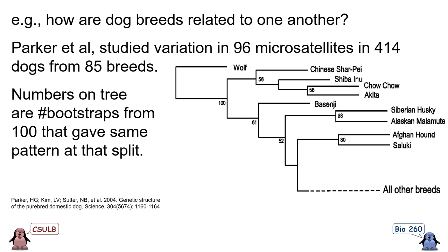Some breeds always clustered near each other, like Siberian Husky and Alaskan Malamute, which are very similar breeds — likewise for Afghan Hound and Saluki. On the other hand, in the Shar-Pei, Shiba Inu, Chow Chow, and Akita group, relationships were less repeatable. These breeds appear to be more genetically distinct from most other breeds, suggesting they were developed early in the domestication process rather than during the last few hundred years like most other breeds.